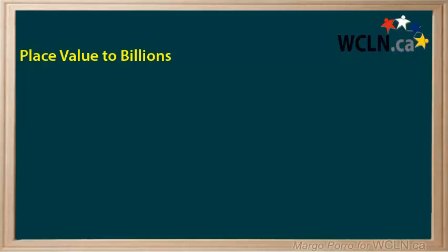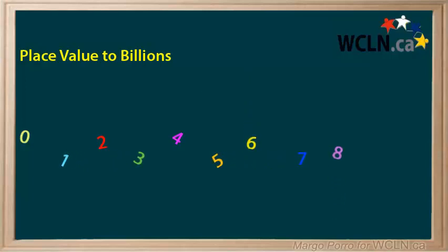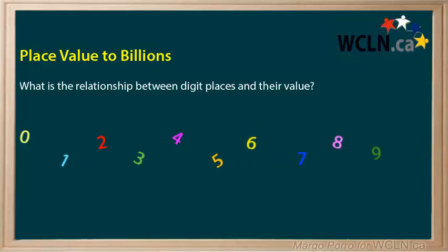Hi, this is Margo Porro from the Western Canadian Learning Network. Thanks to place value, any number can be made with just 10 digits from 0 to 9. What is the relationship between digit places and their value? Let's take a look using numbers with up to 10 places.